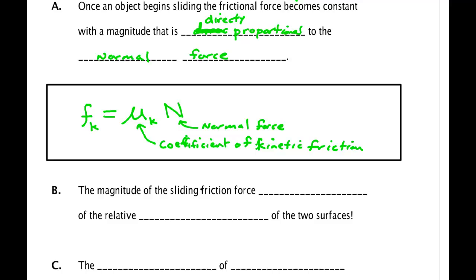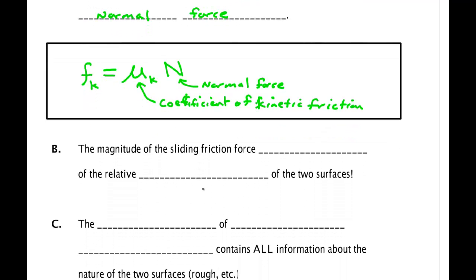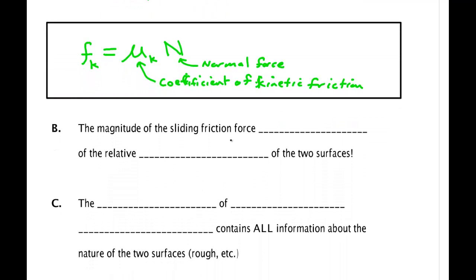One interesting thing you might not expect is that the magnitude of the sliding friction force is independent of the relative motion of the two surfaces. This means that if the object slides at a faster speed, the friction force doesn't go up.